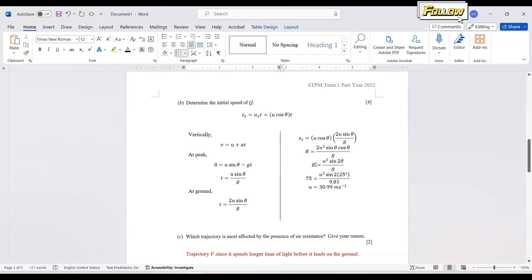So you can check again each of the variables in the equations, we have the range as 75 meters, angle 25 degrees, the gravitational acceleration is 9.81 meters per second squared. So now we have all the values ready. So you can start do the calculation and the initial speed of Q is equal to 30.99 or it is almost to 31 meters per second.